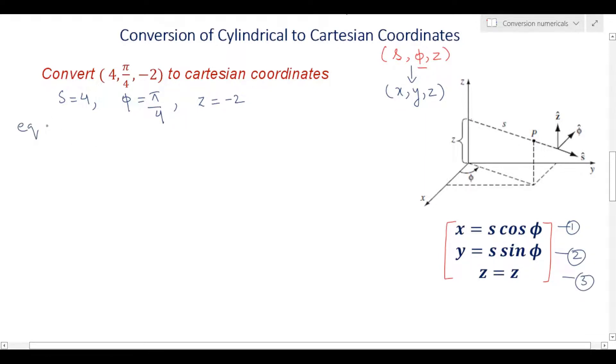From equation number one we can get the x coordinate. Our x coordinate will be x equals s cos phi. S is 4, cos(π/4). We know that cos(π/4) is 1/√2. We substitute the value: 4 × 1/√2. This becomes 4/√2, which becomes 2√2 when we rationalize. So your x coordinate will be 2√2. This will be your first point.